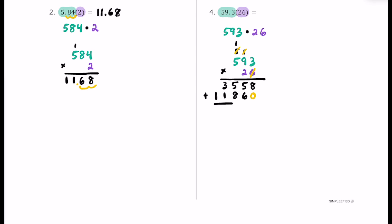Now we add the partial products. Eight plus nothing is eight. Five plus six is 11 — put the one and carry the one. One plus five is six, six plus eight is 14 — put the four and carry the one. One plus three is four, four plus one is five. Put the five. And finally bring down this one. There's only one decimal place in the original problem, so we place the decimal one spot from the right. Our final answer is 1,541 and eight tenths.